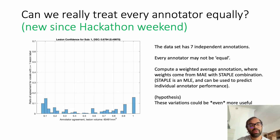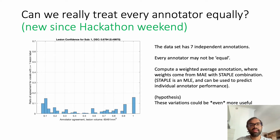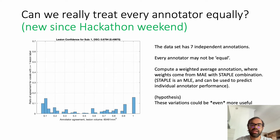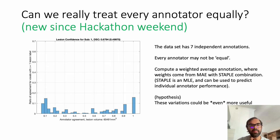One of the questions that came up during the hackathon was whether we can treat each of the seven annotators equally. Every annotator may not be equal, and hence what we do is compute a weighted average annotation where these weights come from measuring the difference between the individual annotation and the combination of the seven created using STAPLE. STAPLE is a good estimate of the optimal combination, so the distance from STAPLE is a good measure of how accurate that annotator is. We come up with a more detailed histogram and hypothesize that these variations could be even more useful.